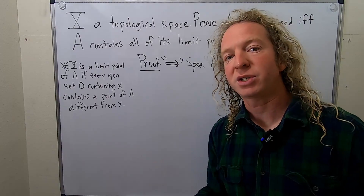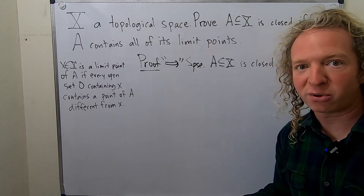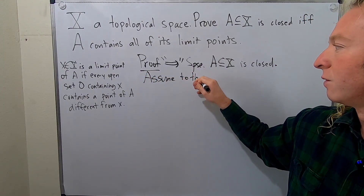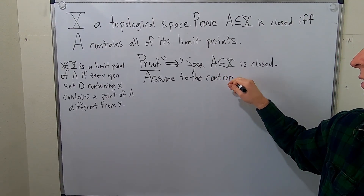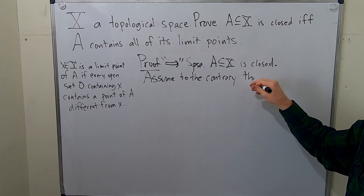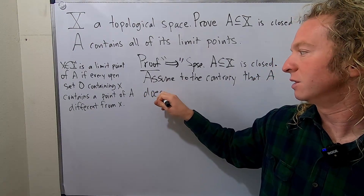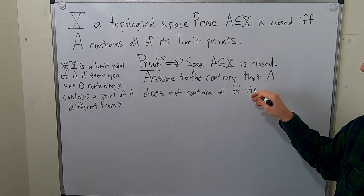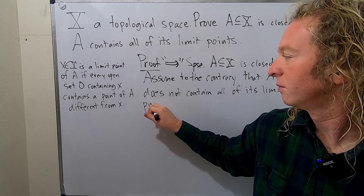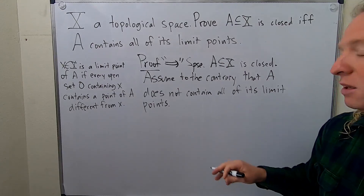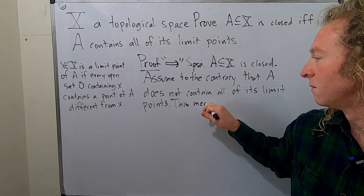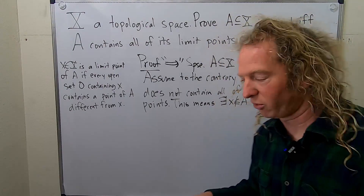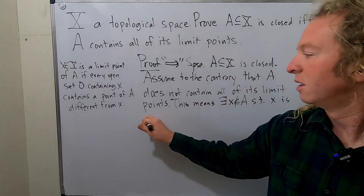We're going to do this by using a proof by contradiction. So we'll assume that it does not contain all of its limit points and try to reach a contradiction. Assume to the contrary that A does not contain all of its limit points. This means there exists an X that's not in A such that X is a limit point.